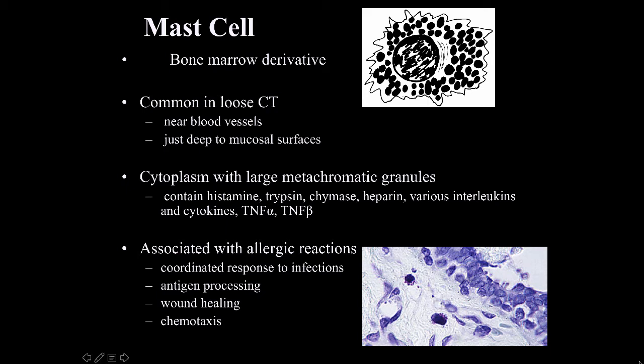At the light microscopic level, you can see mast cells chocked full of granules. Mast cells are very important in association with allergic reactions. They coordinate responses of other cells to infections, can be involved in antigen processing and wound healing, and can secrete chemotactic substances to allow other cells to come into connective tissue.